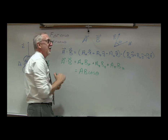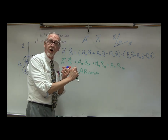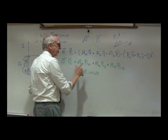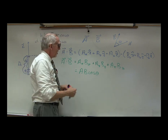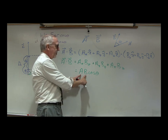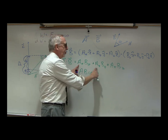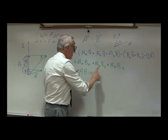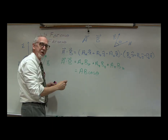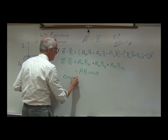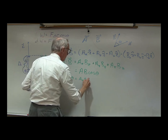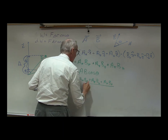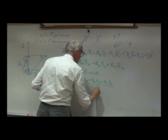We derived this using the commutative law, the distributive law, and the fact that dotting a vector into itself gives its magnitude squared. This also gives us a way to find the angle between two vectors. Cosθ equals (Ax·Bx + Ay·By + Az·Bz) divided by the magnitude of A times the magnitude of B.